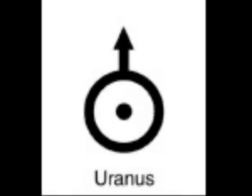This is Uranus. Uranus looks like a combination of Sun and Mars — a circle with a dot in the center and an arrow pointing straight up rather than off to the side.